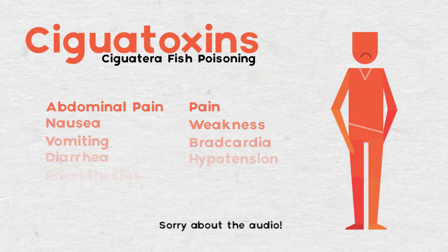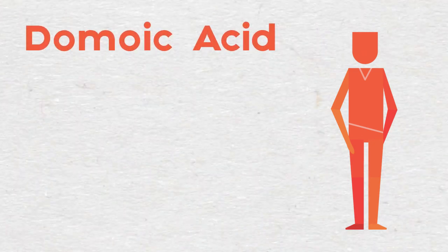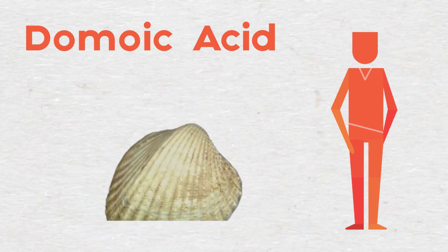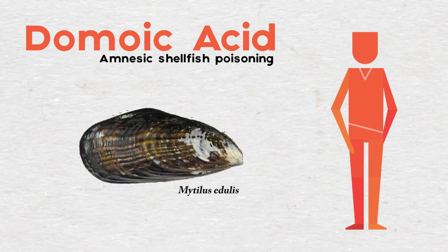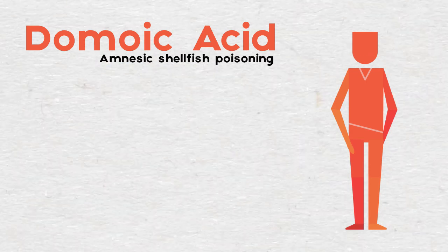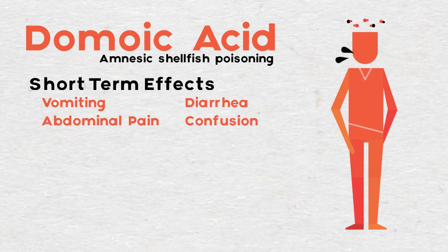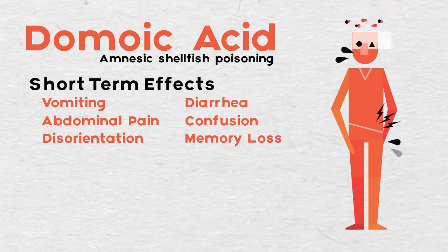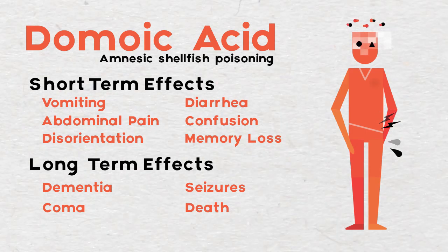Ciguatoxins aren't the only toxins algae produce. A handful of algae species have been shown to produce domoic acid, which can then bioaccumulate within shellfish. If you eat too many contaminated shellfish, this may lead to amnesic shellfish poisoning. If you do have the unfortunate luck of experiencing this, vomiting, diarrhea, abdominal pain, confusion, disorientation and memory loss will be the first symptoms. This can lead to dementia, seizures, coma, and potential death.